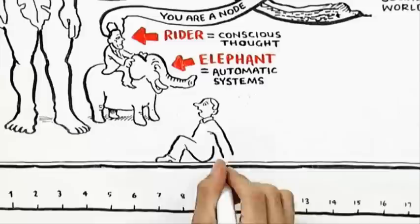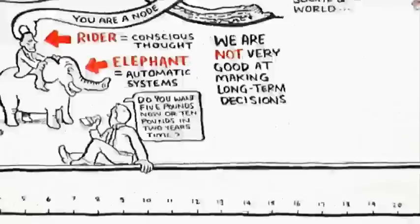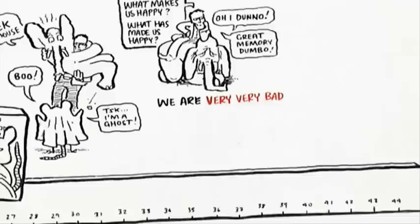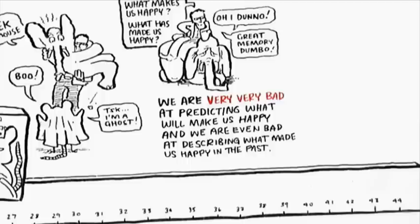And there are other lessons that we can learn from the more subtle and holistic model of human nature now emerging. We're not very good at making long-term decisions. We're much better at understanding relative than absolute values. And as we found out in the credit crunch, we are enthralled to what Keynes called animal spirits. Perhaps even more startlingly, we are very, very bad at predicting what's going to make us happy. And we're even bad at describing what made us happy in the past.